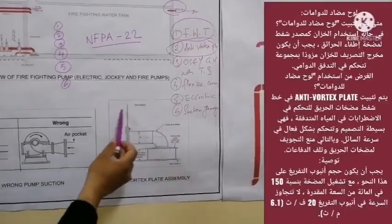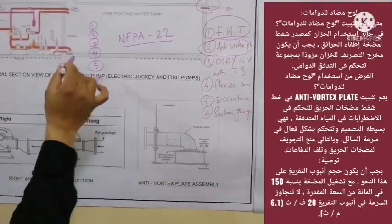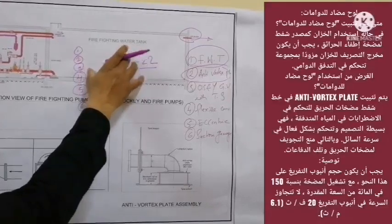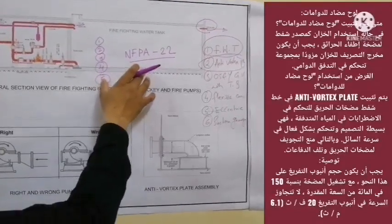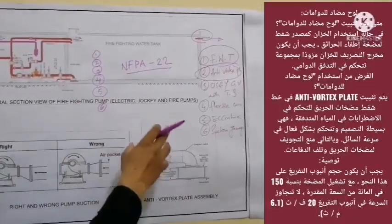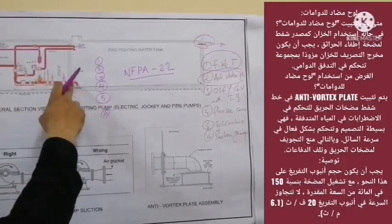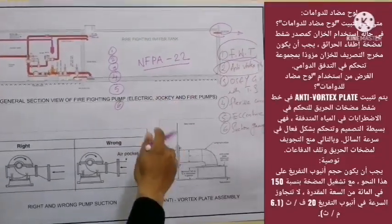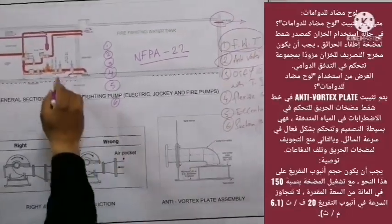Let's come to number two — the anti-vortex plate. This is the anti-vortex plate assembly, which is installed inside the water tank. The anti-vortex plate is installed at the discharge outlet where a tank is used as a suction source for a fire pump. The discharge outlet of the tank shall be equipped with an assembly that controls vortex flow. It is installed in the suction line of the fire pump to control turbulence in flowing water. They are simple in design and very efficient at controlling the velocity of fluid, thus preventing cavitation to the fire pump and damage to pump impellers.